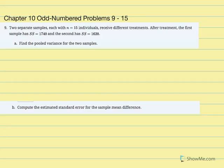Chapter 10 odd number problems 9 through 15. Number 9: two separate samples, each with n equal to 15 individuals, receive different treatments. After treatment, the first sample has sum of squared deviations equal to 1740 and the second has sum of squared deviations equal to 1620. Find the pooled variance for the two samples.